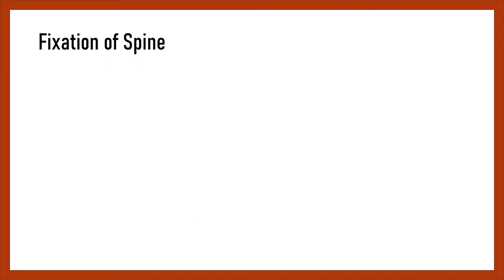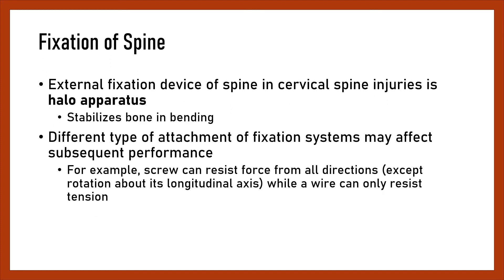Fixation of the spine: The external fixation device for the spine in cervical spine injuries is the halo apparatus, which stabilizes the bone in bending. Different types of attachment of fixation systems may affect subsequent performance. For example, a screw can resist force from all directions except rotation about its longitudinal axis, while a wire can only resist tension.